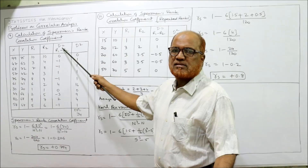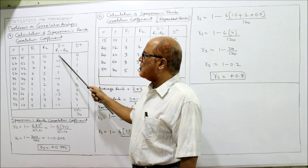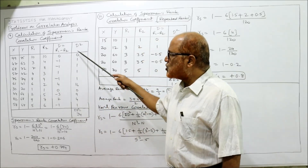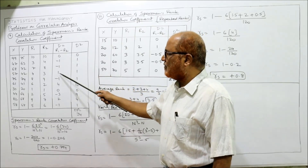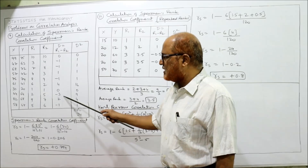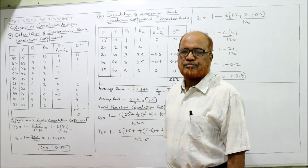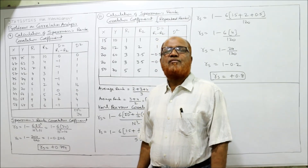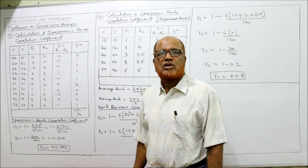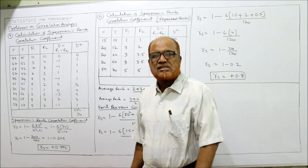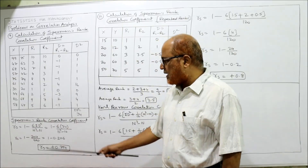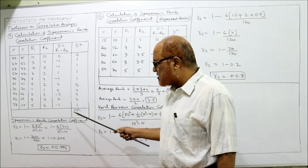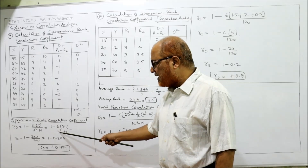D equals R1 minus R2. So: 10 minus 10 = 0; 3 minus 4 = −1; 7 minus 8 = −1; 4 minus 3 = 1. Now square each D value: 0² = 0, (−1)² = 1, (−1)² = 1, 1² = 1, 4² = 16, 3² = 9, 2² = 4, 1² = 1. The total summation of D² is 34.